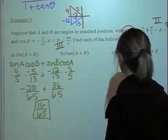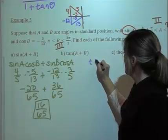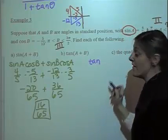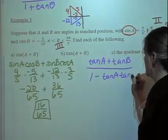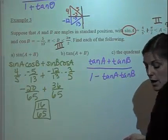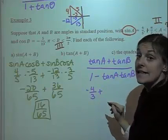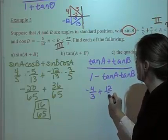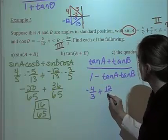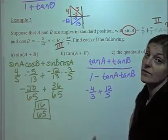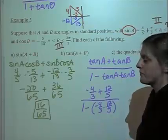Now let's look at the tangent of a plus b. We have tangent a plus tangent b over 1 minus tangent a times tangent b. Tangent of a is going to be negative 4 thirds. Tangent of b is going to be 12 fifths — and it's positive because you have a negative 12 and a negative 5, so that makes it positive.